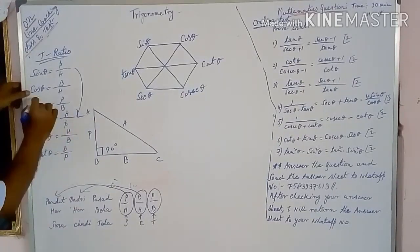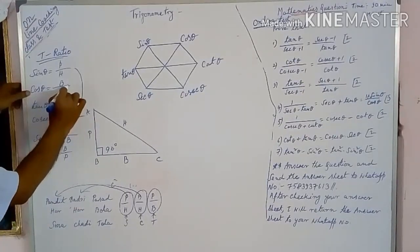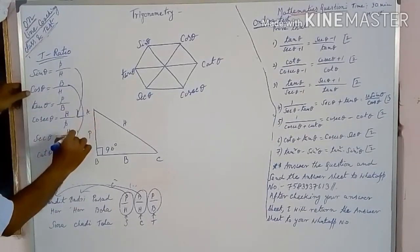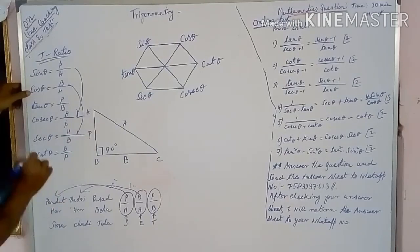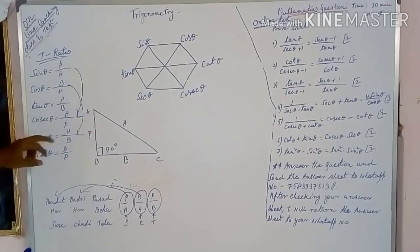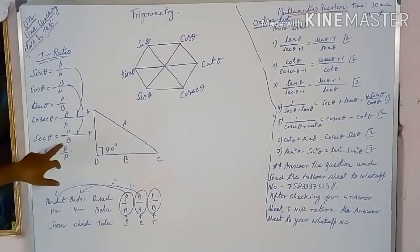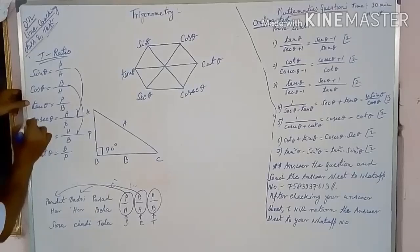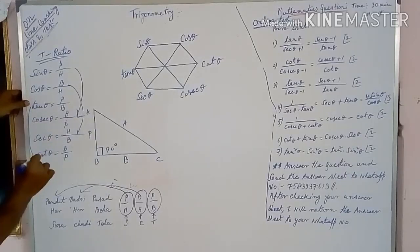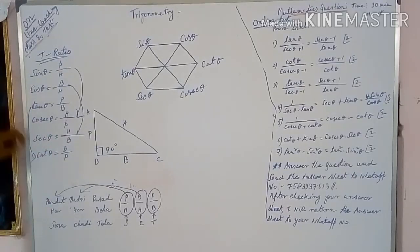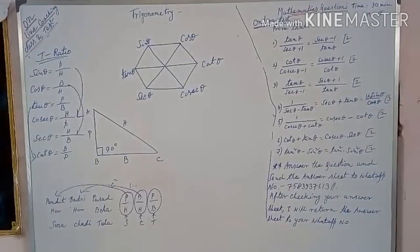The reciprocal of cos theta is sec theta, which is equal to hypotenuse by base, and the reciprocal of tan theta is cot theta, that is base by perpendicular.